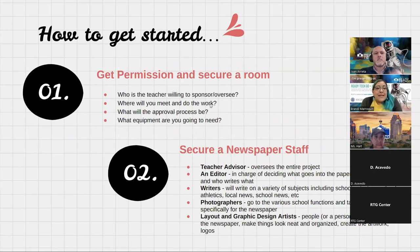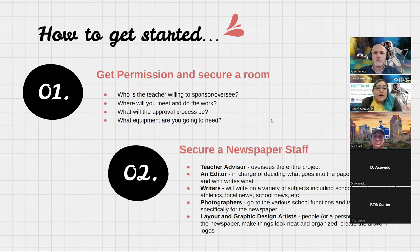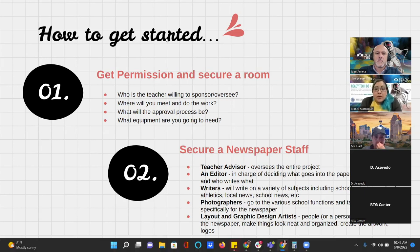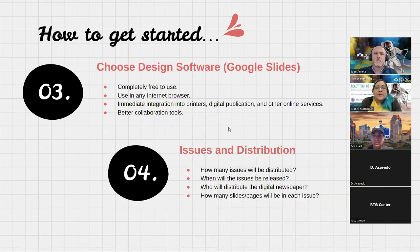The first thing: get permission. Talk to your admin — they're probably not going to turn you down if you want to have a newspaper, but definitely get permission and secure a room where your team is going to meet and work. You also need to figure out what the approval process is going to be for student and teacher submissions, and ultimately you'll need to find a sponsor — either yourself or someone on campus willing to oversee the project in its entirety.